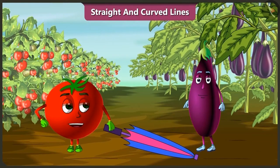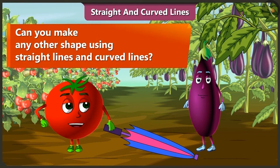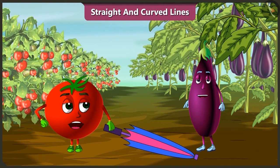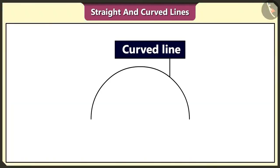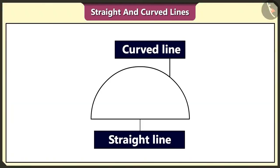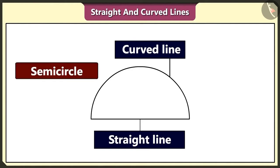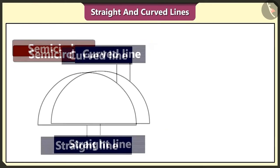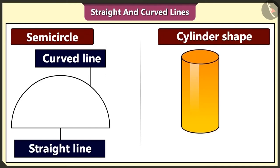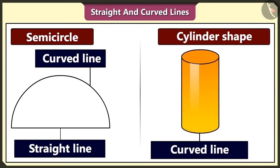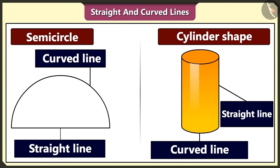Bingu, can we make any other shape using straight and curved lines, like we made an umbrella? Using a curved line and a straight line, we can make a semicircle like this. And yes, a cylinder shape is also made using curved and straight lines.